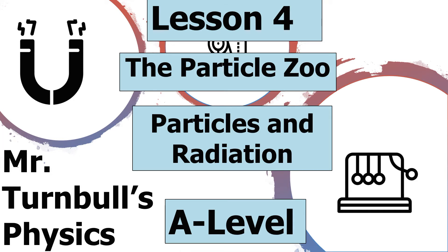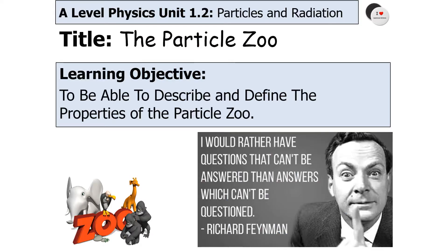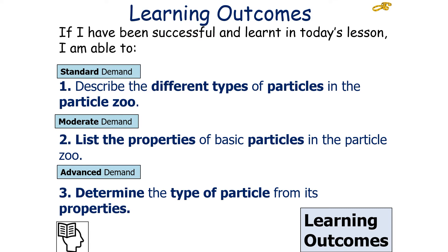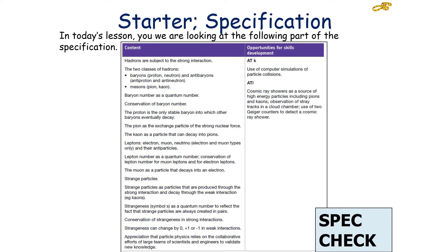Hello, and welcome to today's lesson on the particle zoo, which is part of the particles and radiation topic in AQA A-level physics. In today's lesson, we're going to look at how we can describe and define the properties of the particle zoo. If we're successful, we should be able to describe the different types of particles, list their properties, and determine the type of particle from its properties, which falls into the AQA A-level physics specification.